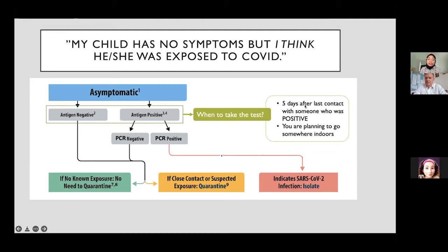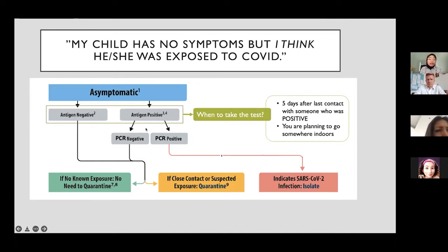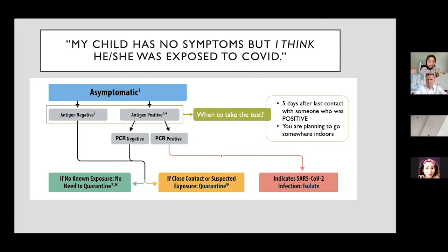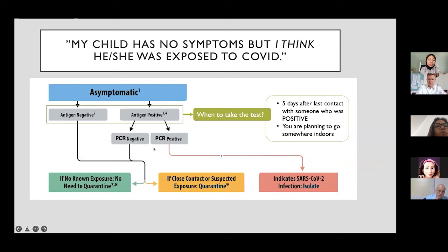An antigen test can also be taken as a screening measure if you are planning to attend an indoor event. If a person tests on day five and gets a positive antigen result, when the positivity rate is high we usually trust that result. Sometimes a person does not need to do a PCR to confirm — we usually tell them to just isolate. But if a confirmatory test is needed, a PCR can be done.